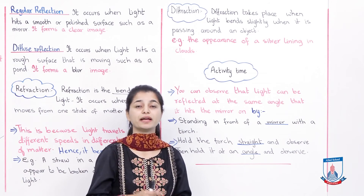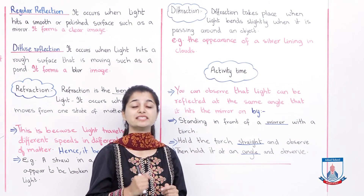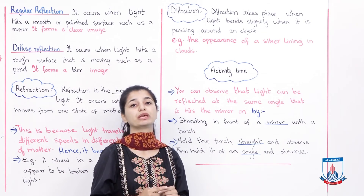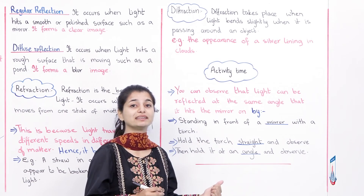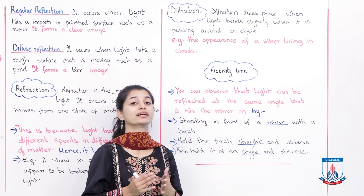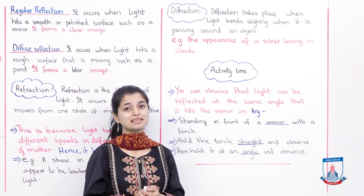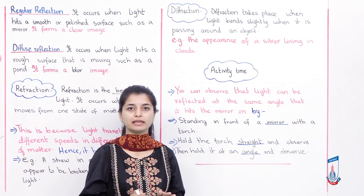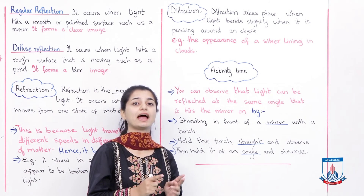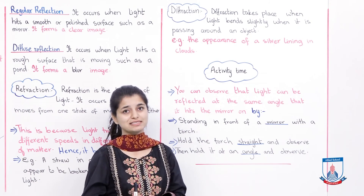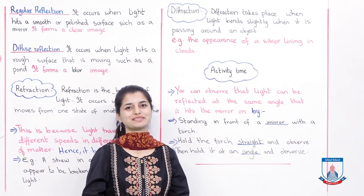Then hold the torch at an angle and observe. You will see it reflect behind the mirror as well. This is a small activity. We will also discuss concave and convex lenses in the next class. I will see you in the next class, Inshallah. Allah Hafiz.